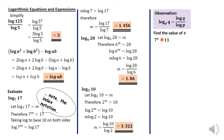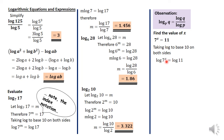We have another question: find the value of x in 7 raised to the power x equals 11. This is like saying log base 7 of 11 is x, solve for x. We take logarithm to base 10 on both sides, and x can be brought before log 7, so we have x log 7 is equal to log 11. Therefore x equals log 11 divided by log 7, and the answer will be 1.232.